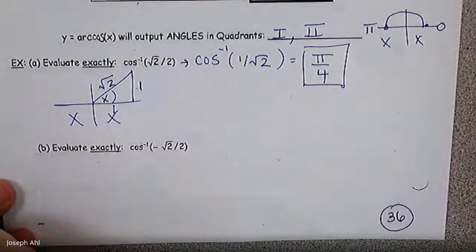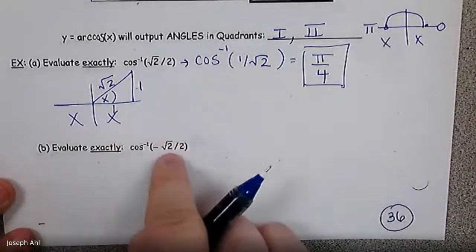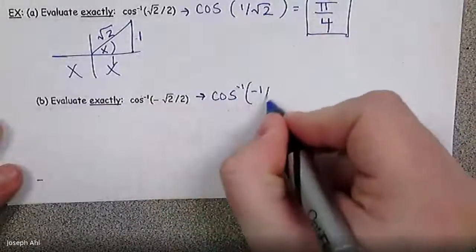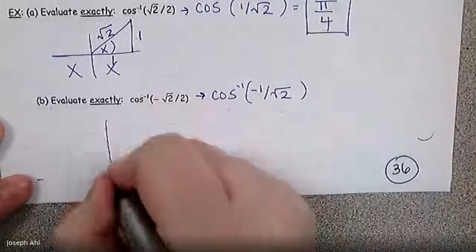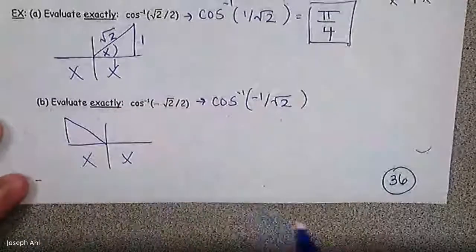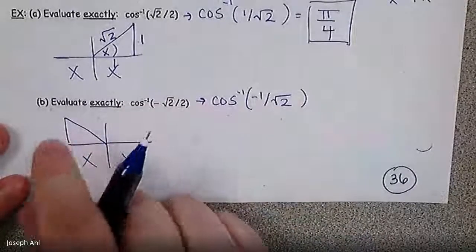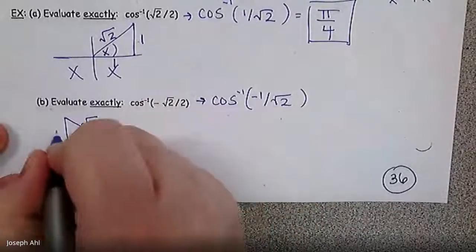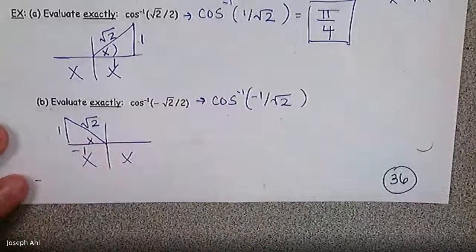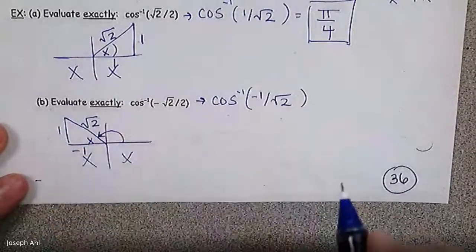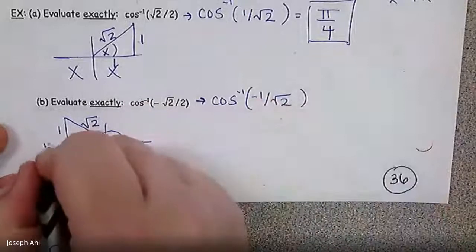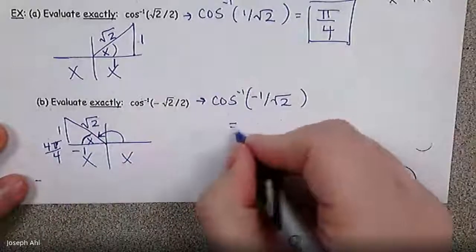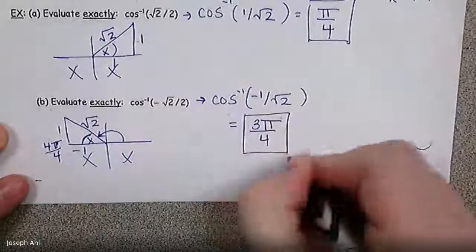How does that change when we have a negative out front? Think of it as cosine inverse of negative 1/√2. Instead of being in quadrant 1, you move to quadrant 2 where cosine is negative. Same reference angle π/4. When in quadrant 2, halfway around is π (= 4π/4), so subtract out the reference π/4 to get an answer of 3π/4.